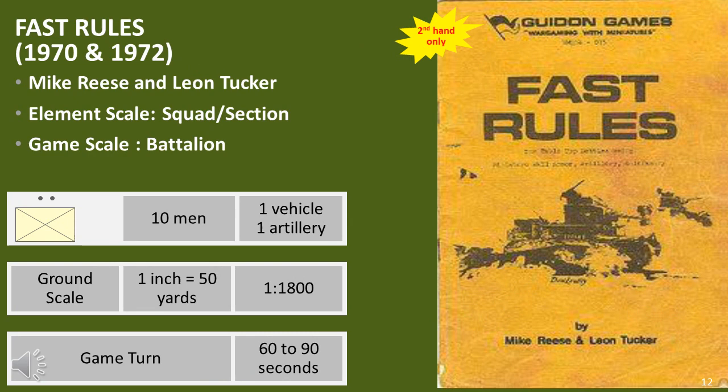Fast Rules was developed by Mike Rees and Leon Tucker and published as a 24-page pamphlet in 1970 by the Armoured Operations Society, an affiliate of the IFW. Gudian Games made a second printing in 1972. I have minimal information concerning these rules, but as it came out shortly after Ungriff, it's safe to say it used a similar scale and was possibly very similar to Tractics.